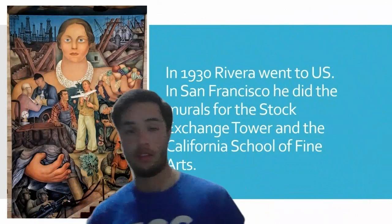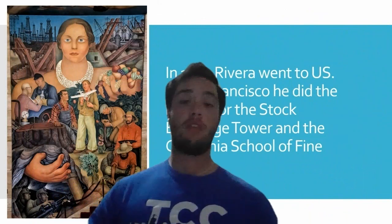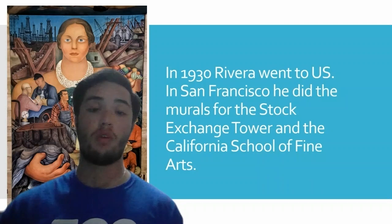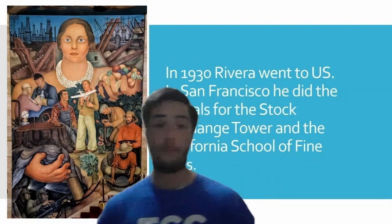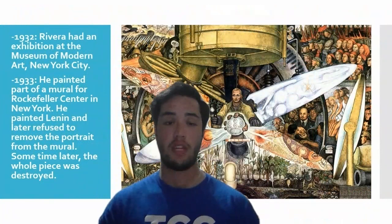In 1930 he went to the U.S., specifically San Francisco, where he did murals for the Stock Exchange Tower and the California School of Fine Arts. As we can see, this is really different from what we saw at the beginning — here he is more involved with industrialization and social issues.